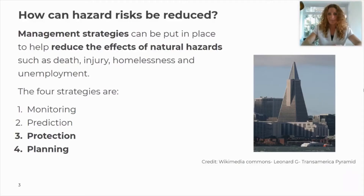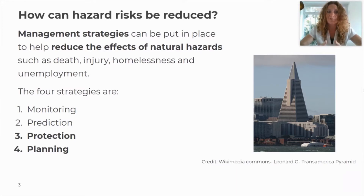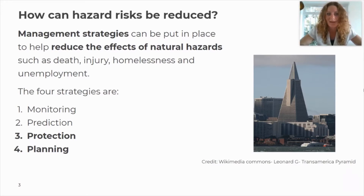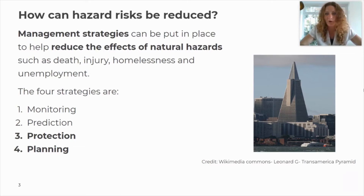Last session we looked at the four different strategies used to manage and reduce the effect of natural hazards: monitoring, prediction, protection, and planning. Last session we focused on monitoring and prediction; this session we focus on protection and planning. The aim of all these strategies is to reduce deaths, injuries, homelessness, and unemployment — a real focus on social and economic issues.